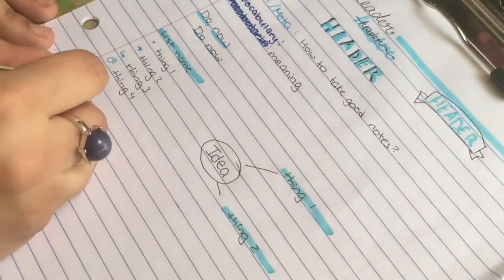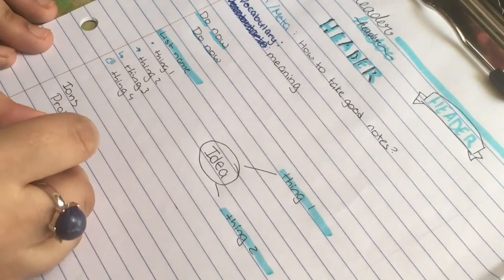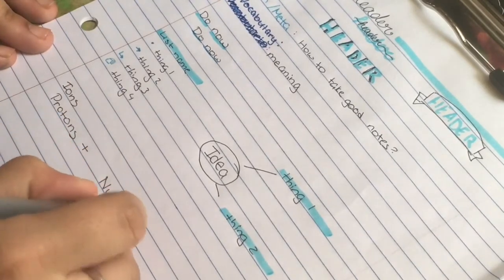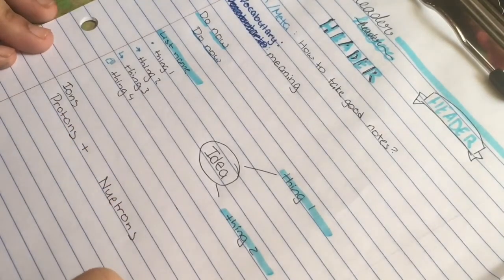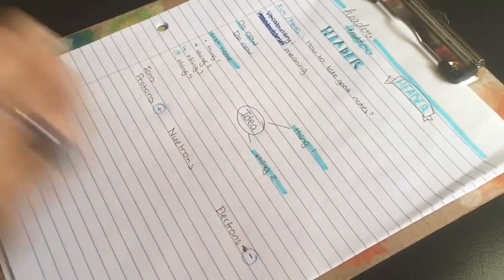Sometimes simple notes like proton positive, neutrons, and electron negatives. I also make a lot of mistakes. To show the difference between the two, I'll mark around the positive and negative to show the difference.